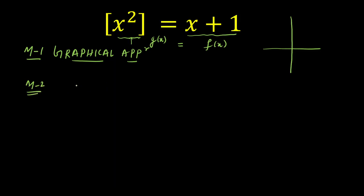Method two: [x²] = x + 1. If you focus on LHS equals RHS, the left-hand side is an integer because the greatest integer function of x² or anything will give you an integer. So LHS is an integer, which means RHS should be an integer. That means x + 1 should be an integer.